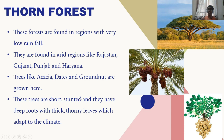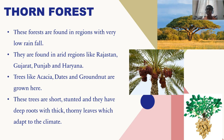These trees are short and stunted — they are like shrubs but they are actually trees. They have deep roots with thick and thorny leaves. These deep roots go deep underground to get water, because these forests are found in regions with low rainfall and trees need lots of water. These trees adapt to the climate.